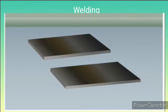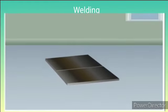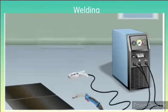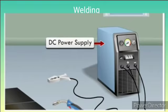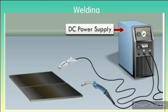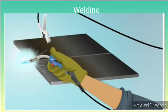Let's do the weld on the metal piece. We will do the weld in the gap and add heat. Once we put the welding torch, we will send an arc generator power.